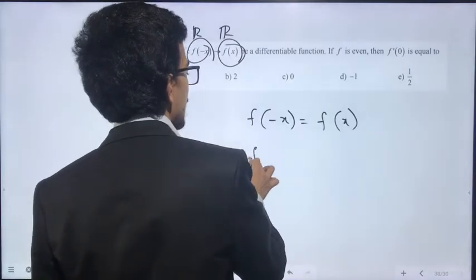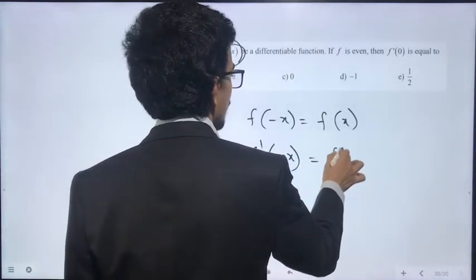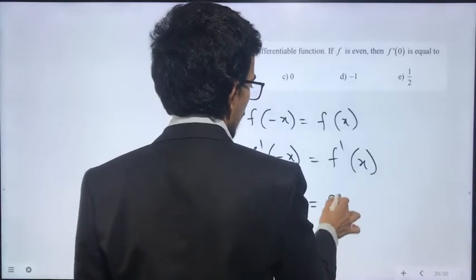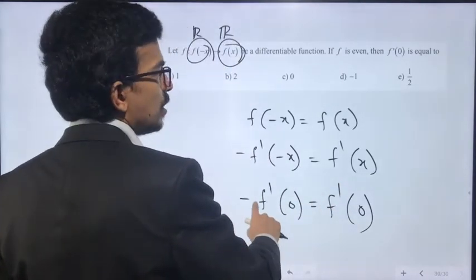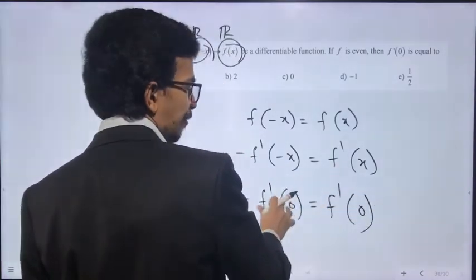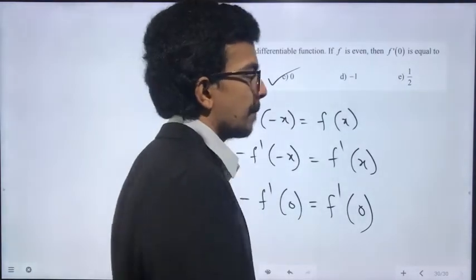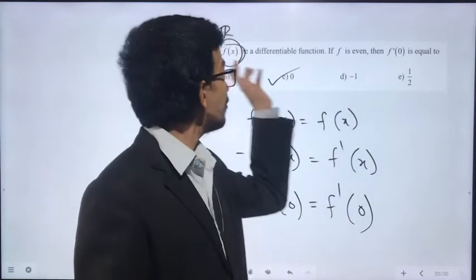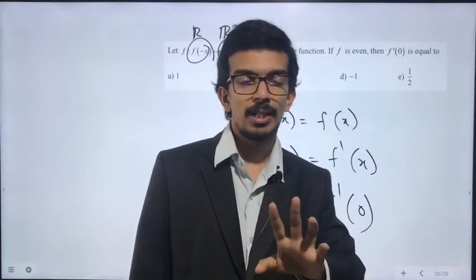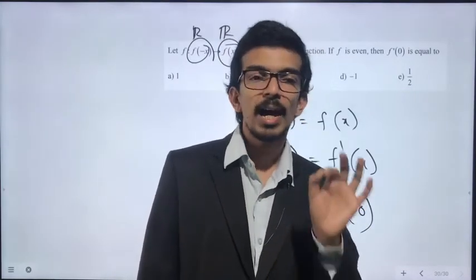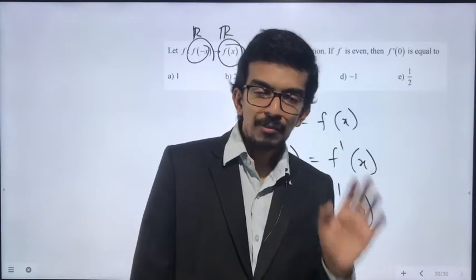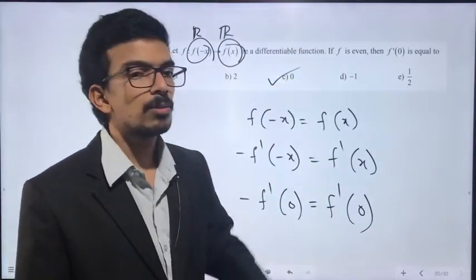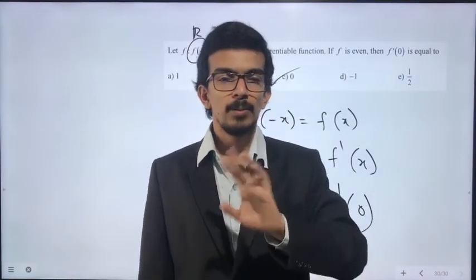Differentiating: -f'(-x) = f'(x). Setting x = 0: -f'(0) = f'(0), so f'(0) = 0. Basically, when an even function is differentiated, you get an odd function, and an odd function defined at the origin has value 0. The answer is 0. Okay, see you in the next video.